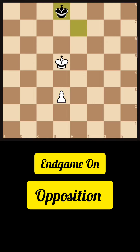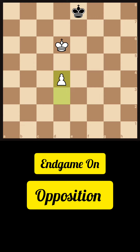So white decides to just play king to d6, king to e8, and then d4, leaving one square gap between the king and the pawn.